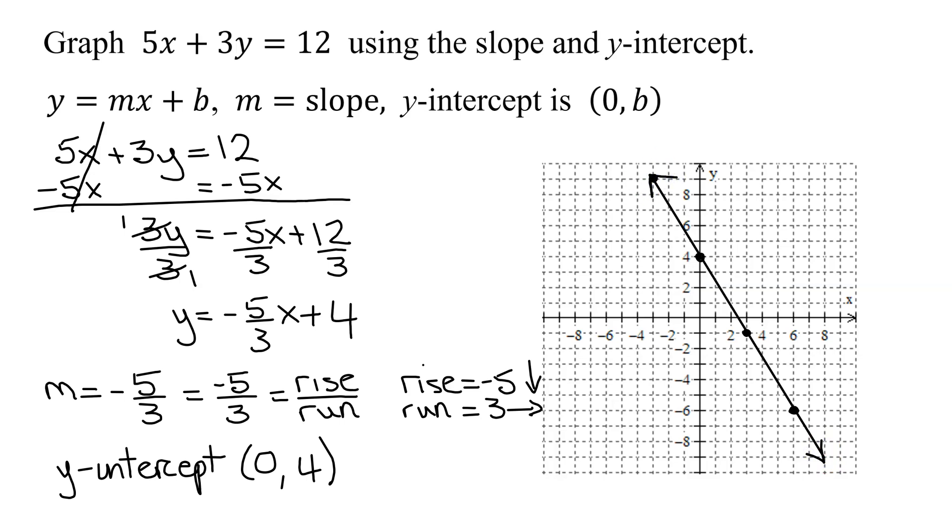Let's double check. Our slope is negative, and our graph went down from left to right. Is that correct for a negative slope? Yes. So we have graphed 5x plus 3y equals 12 using the slope and the y-intercept.